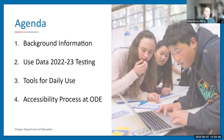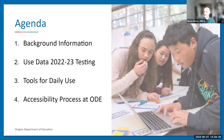Just a brief agenda for today: we'll provide some background about accessibility on the statewide test in Oregon and share resources for deeper exploration. We'll look at data from last year's testing session — I consider myself a data nerd, so we'll nerd out on some graphs. Then Jennifer will talk about using these tools during classroom instruction, and finally I'll share a bit about the accessibility process at the Oregon Department of Education.